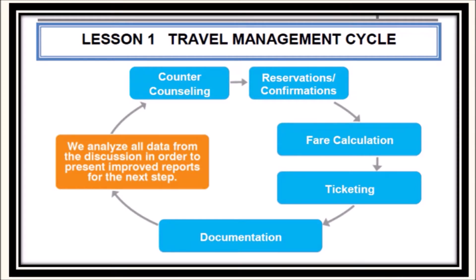This is now the lesson proper in the Travel Management Cycle. Our job starts with counter counseling, then reservations and confirmation, then fare calculations, then ticketing, then documentation, and finally analyzing all data to present improved reports for the next step — and then counter counseling starts again. For this particular week, our lesson deals with counter counseling only. Reservations, confirmation, fare calculations, and documentation will be discussed in next lessons.